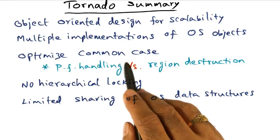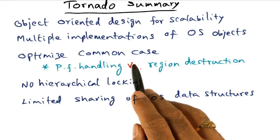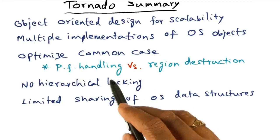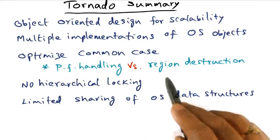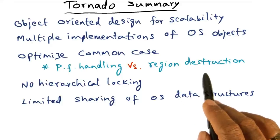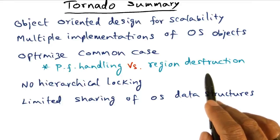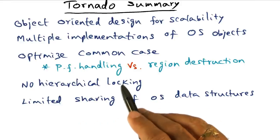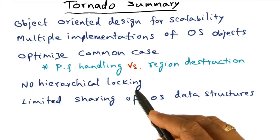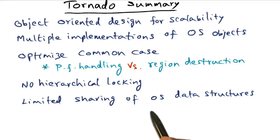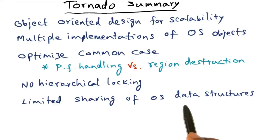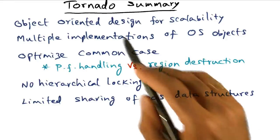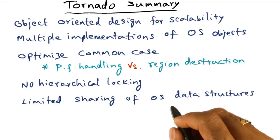Another important principle used in Tornado is optimizing the common case. For example, page fault handling happens quite often, whereas destroying a portion of the address space — called region destruction — happens fairly infrequently, so it's okay if it takes more time. There is also no hierarchical locking through the reference counting mechanism, and limiting the sharing of operating system data structures by replicating critical data structures and managing the replicas is a key property in Tornado to promote scalability and concurrency.